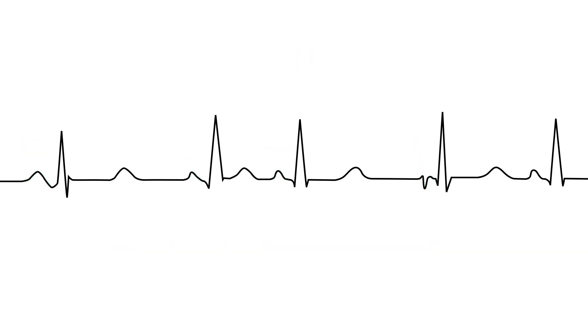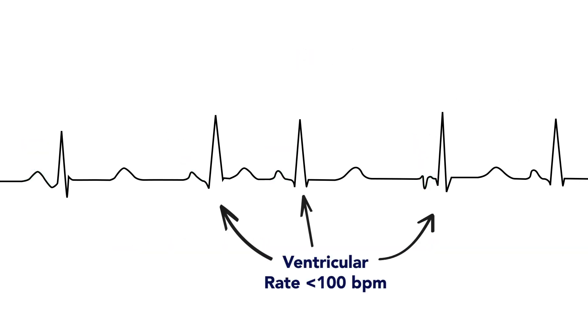Lastly, these EKGs should have a ventricular rhythm less than 100 beats per minute. Anything greater than this would change your labeling of your EKG from a wandering atrial pacemaker rhythm to a multifocal atrial tachycardia.